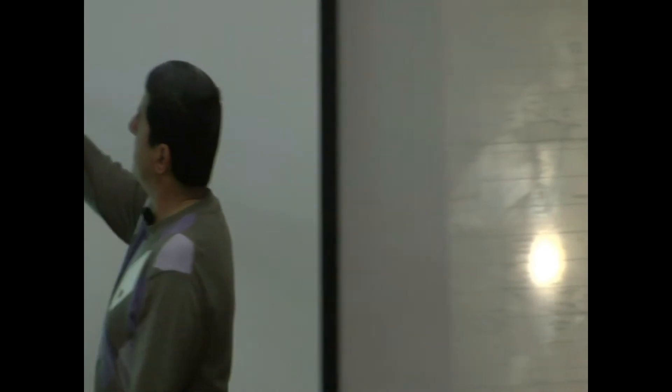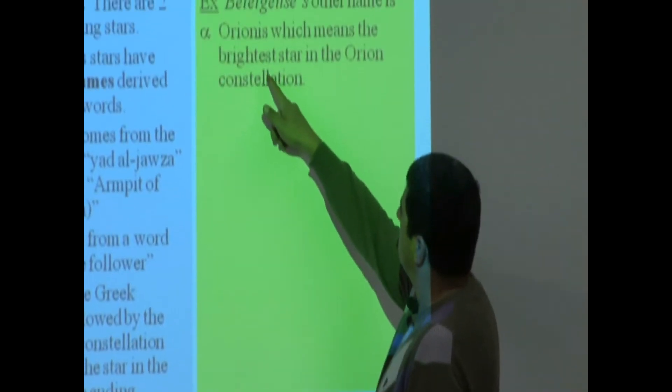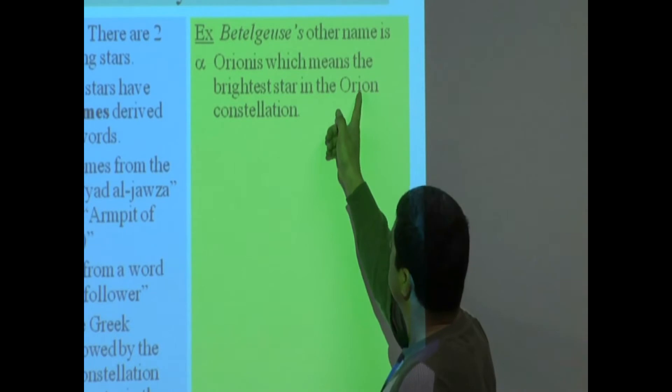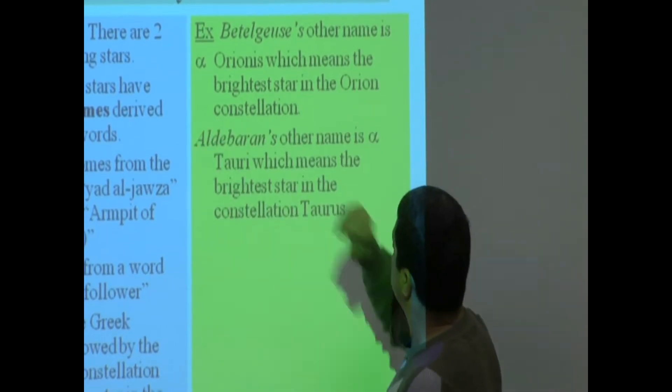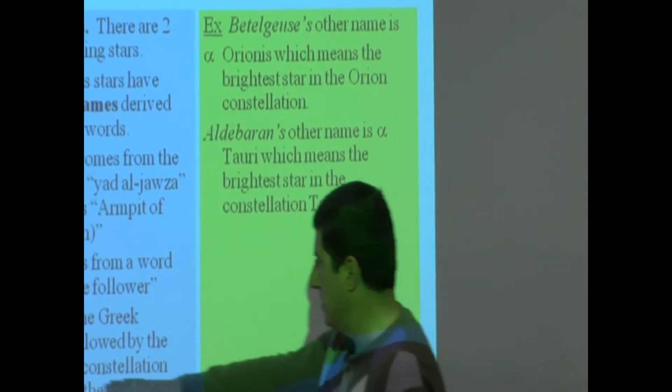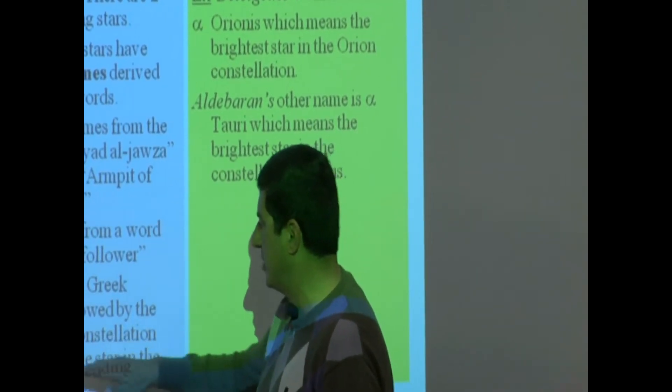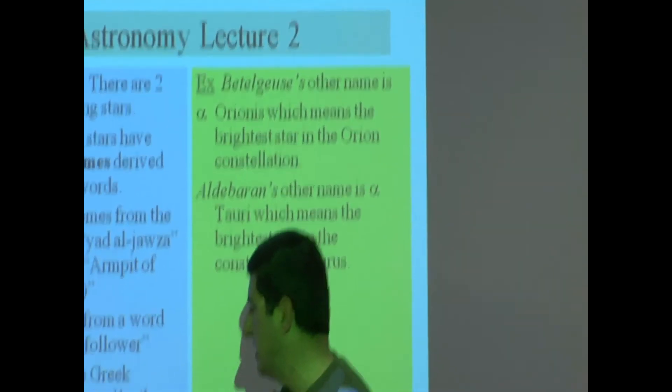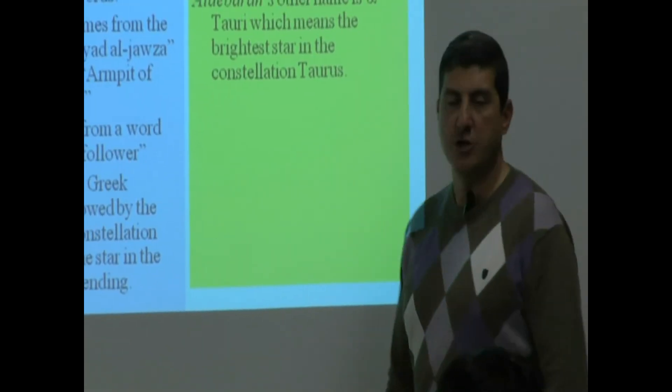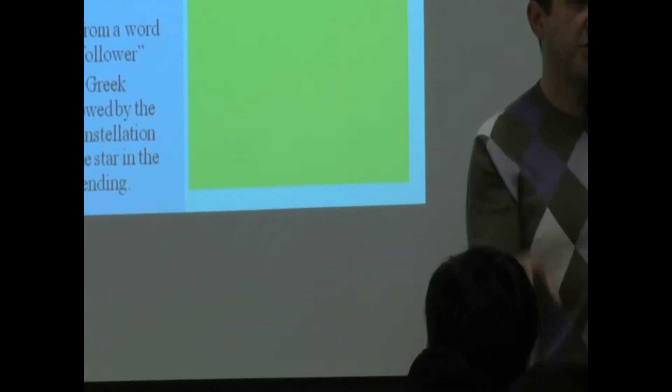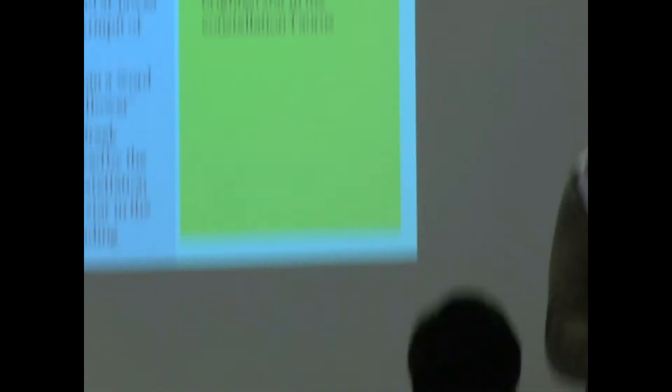Now Orionis is the genitive case of Orion, okay? So basically we're saying here: Greek letter followed by the name of the constellation which hosts the star in the genitive case ending. Remember when I was showing you the names of the constellations and then the second row was the genitive case.